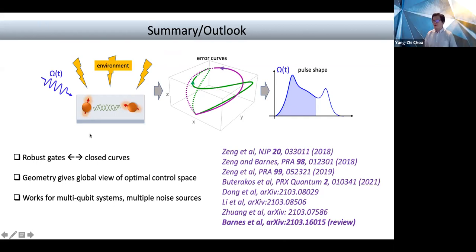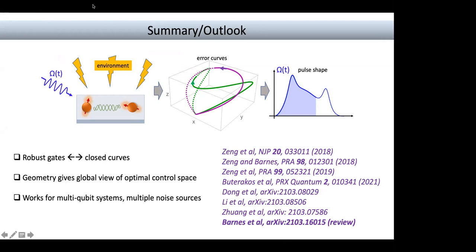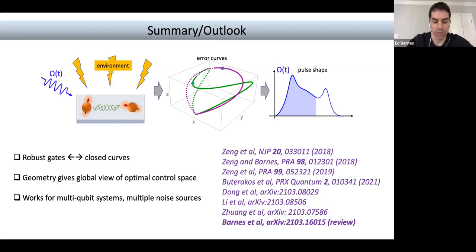Thank you for a very interesting talk. Now it's open to questions. I had a quick question — in the case of three-dimensional curves where you're able to do rotations about any axis, is there a geometric feature of the curve that tells you the angle of rotation and which axis the rotation is being performed about? Yes — a general single-qubit unitary has three real parameters; two of those are fixed by the relative orientation of the initial and final tangent vectors of the curve.